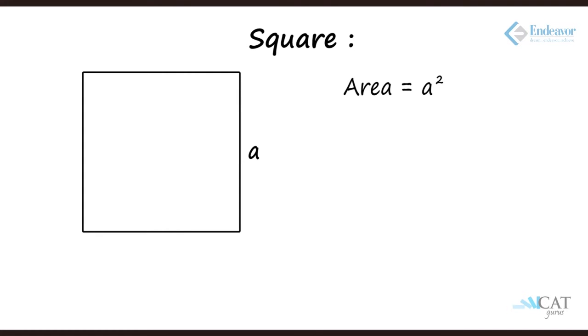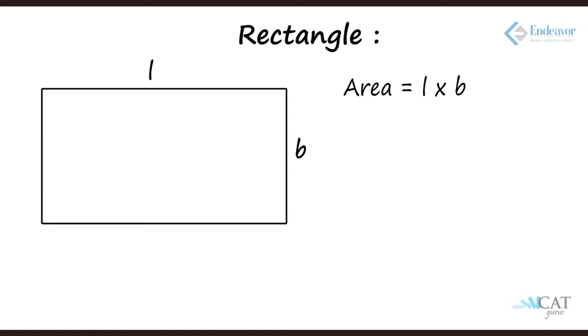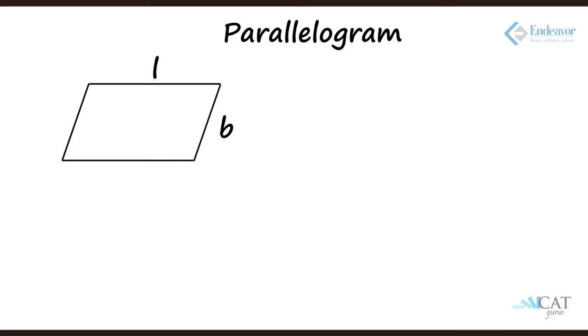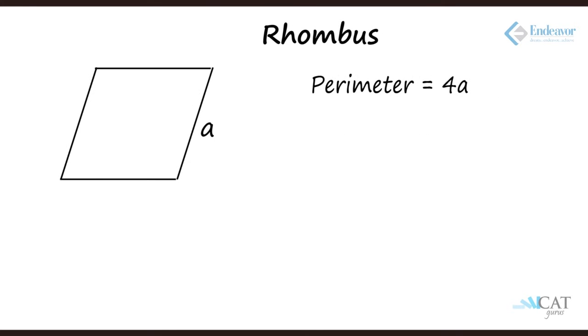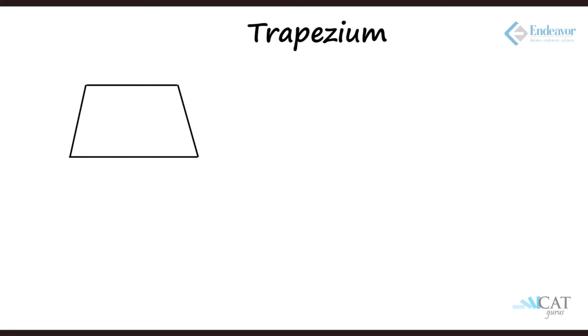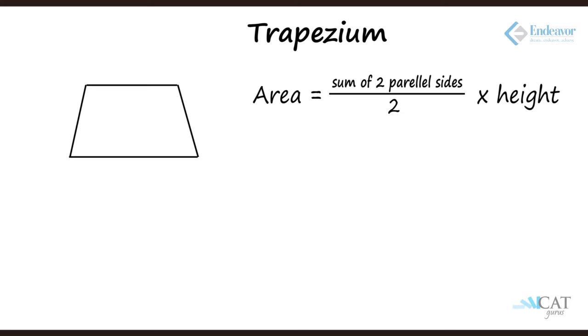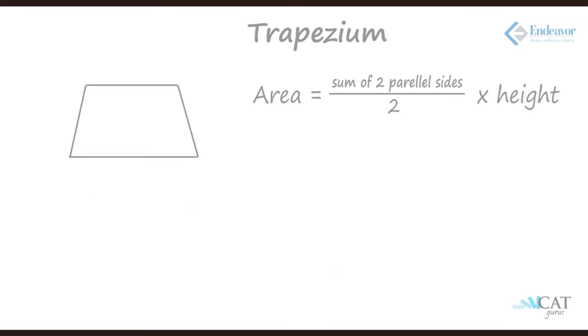Let's look at the formulas for area and perimeter. For a square: area is a squared, perimeter is 4a. For a rectangle: area is l times b, perimeter is 2l plus 2b. For a parallelogram: area is base times height, perimeter is 2l plus 2b. For a rhombus: perimeter is 4 times the side; area is base times height. For a trapezium: area is the sum of the two parallel sides divided by 2, multiplied by the height.